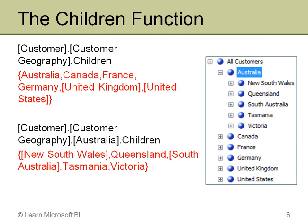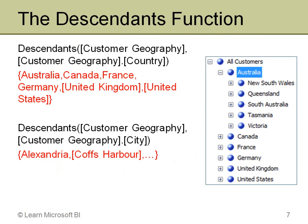The next function is the descendants function, which is similar to children but with major differences: I can go down to any level, not just one, and I can return values from multiple levels. In the first example I use descendants in the customer geography hierarchy and go down to the country level — similar to what I did with children, just specifying the level explicitly. I get back a list of countries.